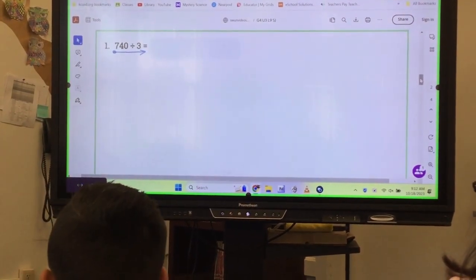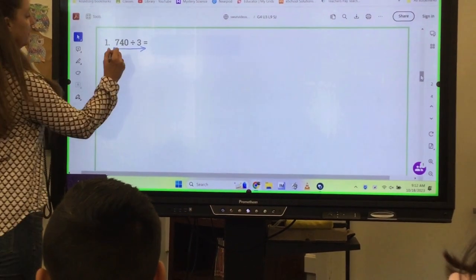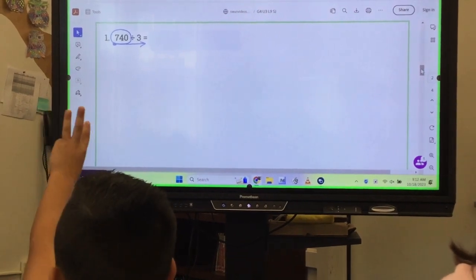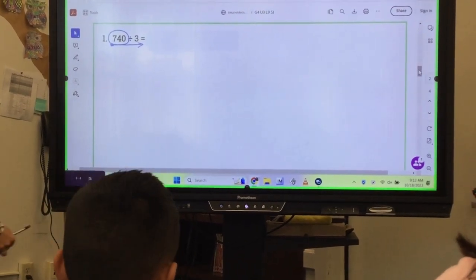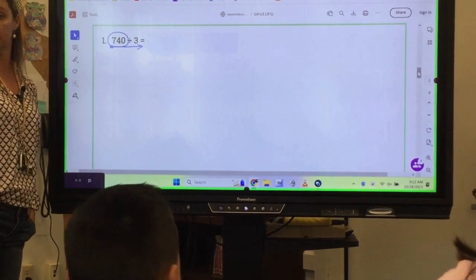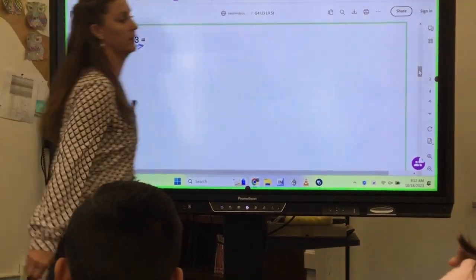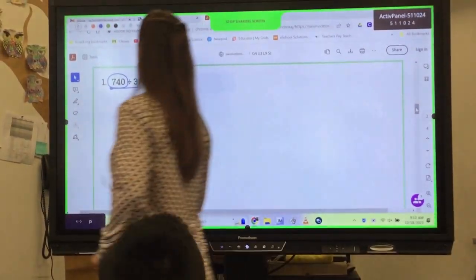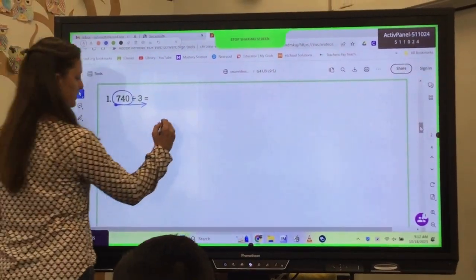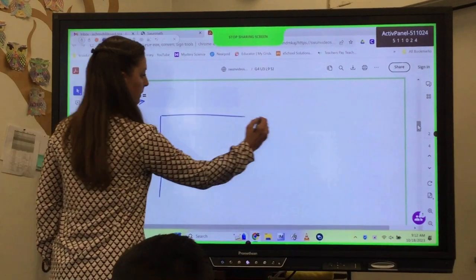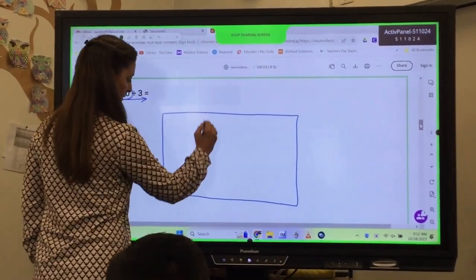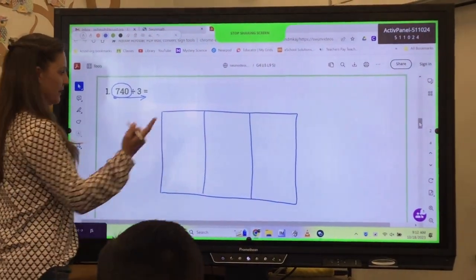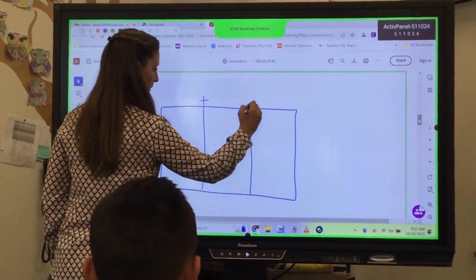Right, so I see 740. Right, 740 has how many digits? Three, three digits. Okay, so that tells me that I have three boxes. Okay, so here we are on step number one. We're going to set up the problem. Okay, so three digits, three boxes.